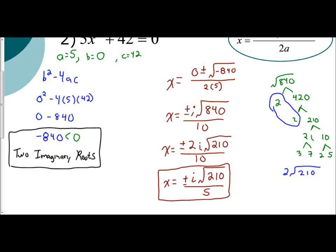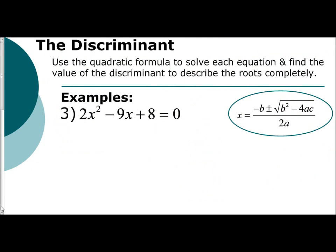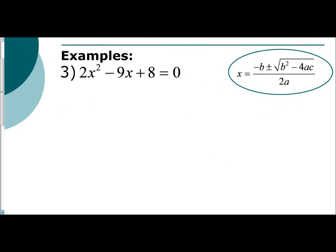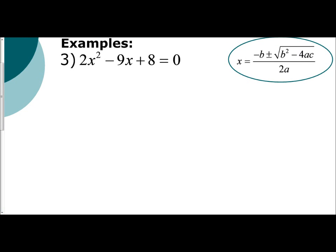Last example dealing with our discriminant and quadratic formula. 2x squared minus 9x plus 8 equals 0. It's already equal to 0. So let's identify a, b, and c. a is 2. b is negative 9. c is positive 8. Jump right to the discriminant. b squared minus 4ac. So you get negative 9 squared minus 4 times 2 times 8. That's going to give you 81 minus 64, which is 17.